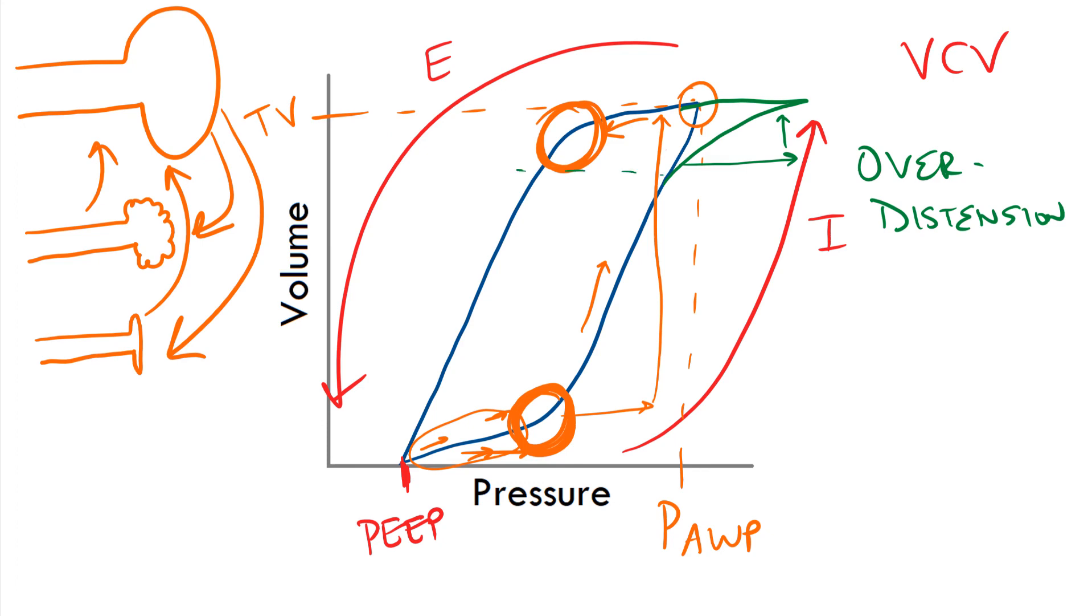So, if you see this on the volume pressure loop, you might want to decrease your tidal volume because there's very little utility in keeping the tidal volume so high if you're over distending the alveoli.